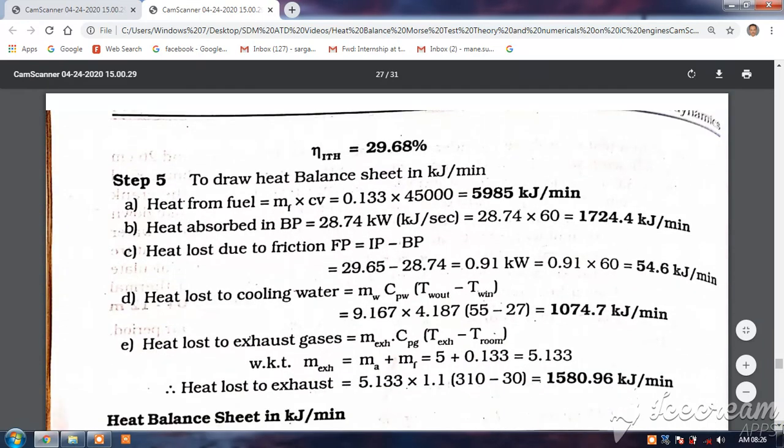Now, to draw the heat balance sheet, straight away mass of fuel 0.133. We have taken all in kg per minute into 45,000. So, it is 5,985 kilojoule per minute. Heat absorbed in BP, that is, we found 28.74 kilojoule per second.